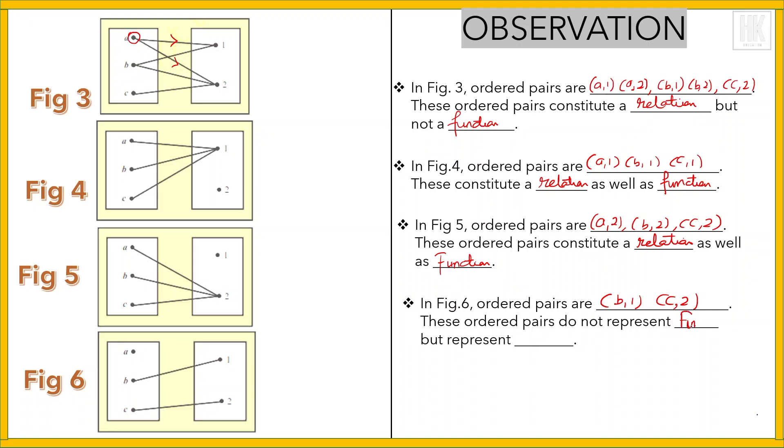Why? Because element a has no image in the second set. So this violates the definition of function. Every element of A must have a unique image in the second set, but it represents a relation but does not represent a function.